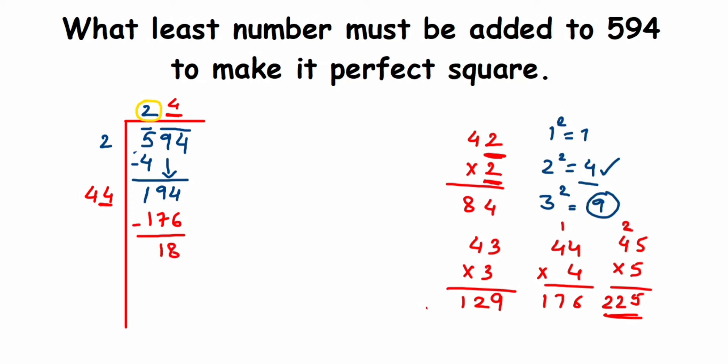Now see, we're getting remainder 18. It means this 594 is not a perfect square. If this would have been a perfect square, if this 18 remainder would not have been there, if we got 0 as a remainder, then the square of 24 would be the perfect square.